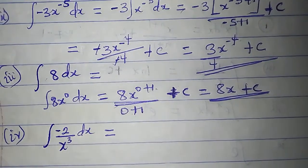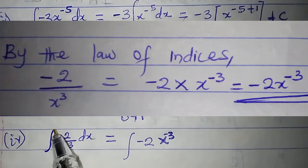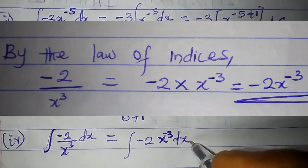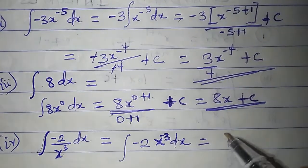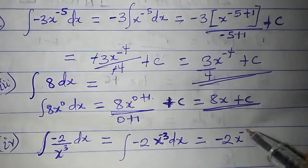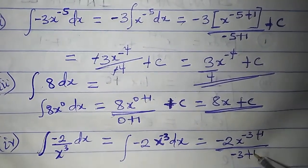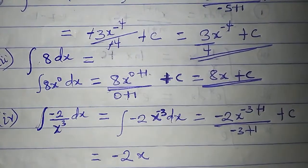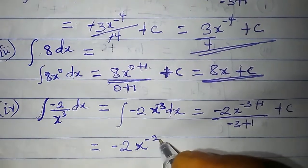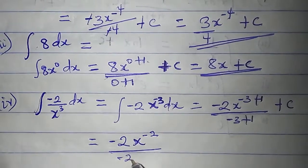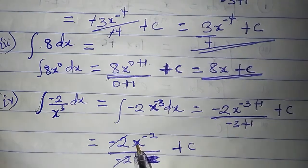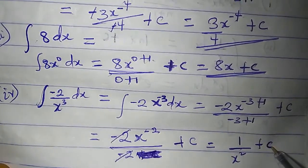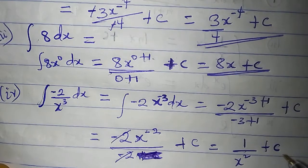What is the integral of minus 2 all over x cubed dx? This can be rewritten as minus 2x to the power of minus 3 dx. Applying the integration principle: minus 2 times x to the power of minus 3 plus 1, all over minus 3 plus 1, plus c. Minus 3 plus 1 is minus 2, so we have minus 2x to the power of minus 2 over minus 2, plus c. The minus 2's cancel, leaving x to the power of minus 2, which is 1 over x squared, plus c.